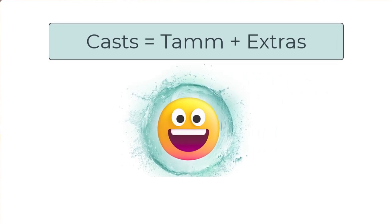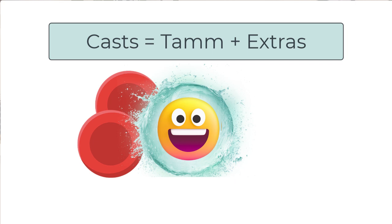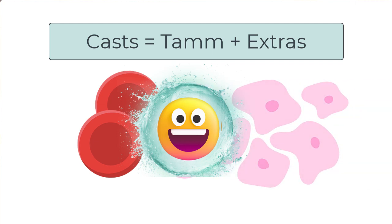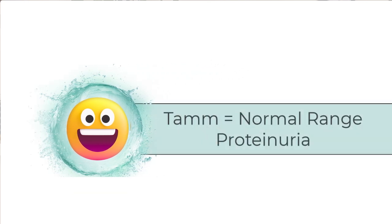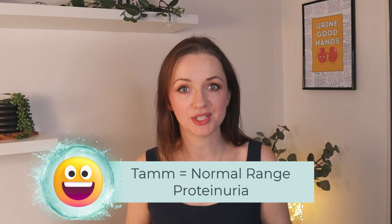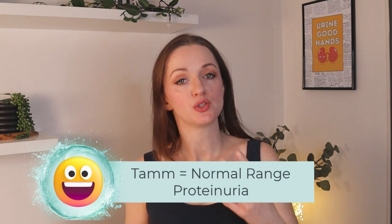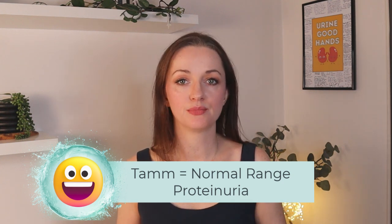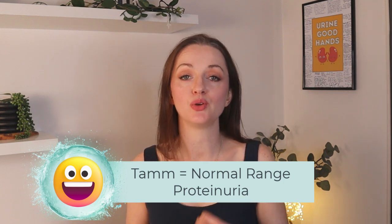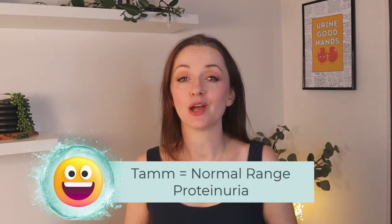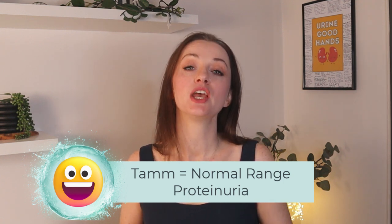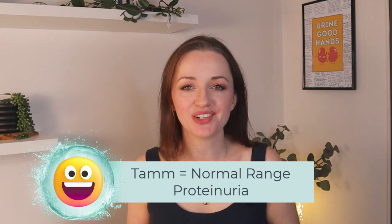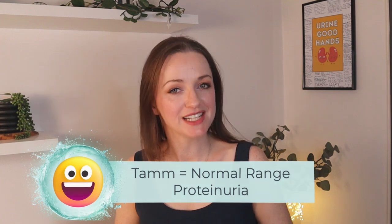Any urinary cast is just Tam plus whatever he dragged along with him from the kidney into the urine — whether it's a red cell cast, white cell cast, any kind of cast, it's Tam plus the pathological process he picked up on the way out. Tam is the key reason we have a normal range for protein in the urine. We generate anywhere between 50 to 150 milligrams of Tam every single day.